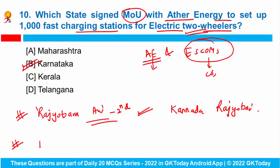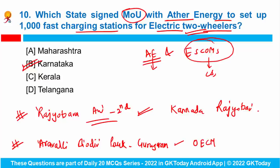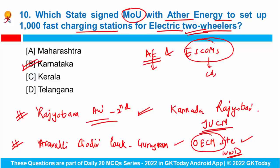Do remember that the Aravalli Biodiversity Park, which lies in Gurugram, has been declared India's first Other Effective Area Based Conservation Measures, that is OECM site, on the occasion of World Wetlands Day. This OECM tag is given by the International Union for Conservation of Nature to areas that are not protected but support rich biodiversity, and it designates the area as a biodiversity hotspot on the international map.